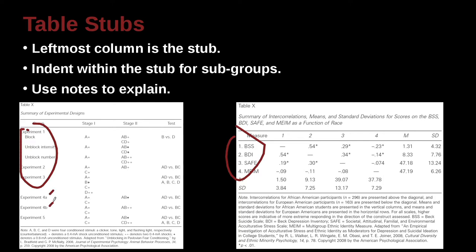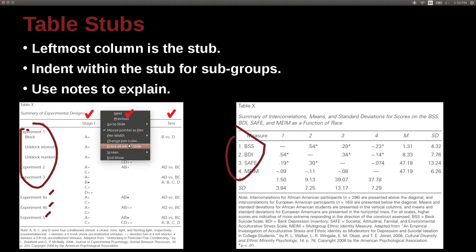Experiment 4A, Experiment 4B, Experiment 5, and then this is stage 1, stage 2, and the test that's being performed. So in this case, we can see an example of how to make our stubs a little bit easier to understand, and one way to do that is to use indentations.